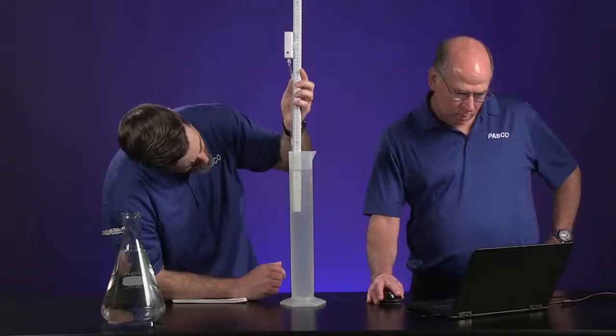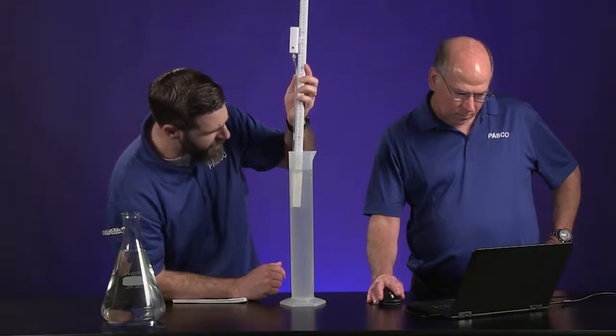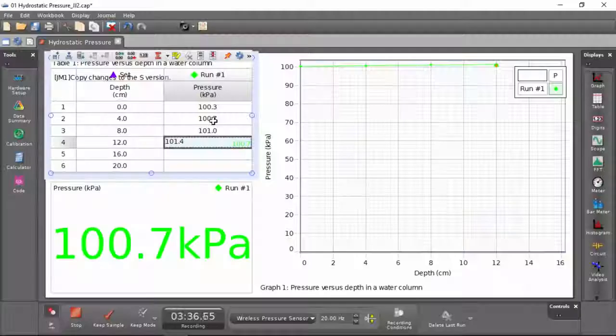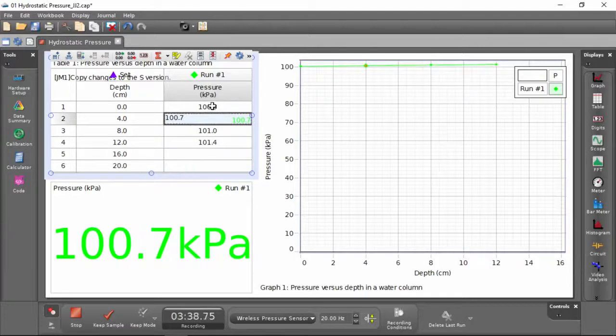Hold on. Go back. OK, go back. I made a mistake. Go back to four. Click on the four. Wow. That's real easy to do with the Capstone software.